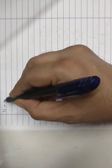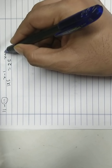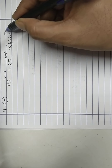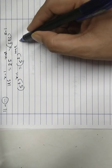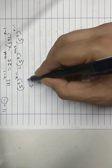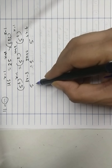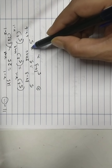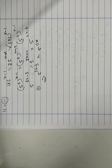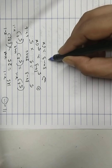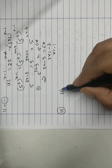Problem 11, Part 3. 125 raised to x minus 1, equals 25 raised to x plus 2, into 625 raised to x minus 1. Convert: 5 cubed to x minus 1, 5 squared to x plus 2, 5 raised to 4 into x minus 1. So 5 raised to 3x minus 3, times 5 raised to 2x plus 4, times 5 raised to 4x minus 4. Base same so add powers for multiplication: 5 raised to 6x. Base same, powers equal: 3x minus 3 equals 6x, so 3x equals minus 3, x equals minus 1.